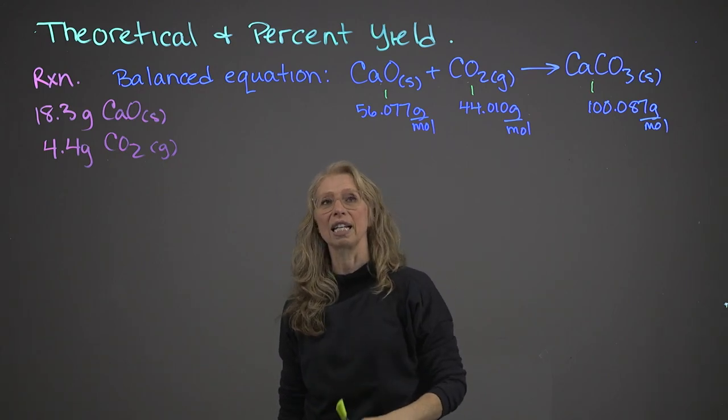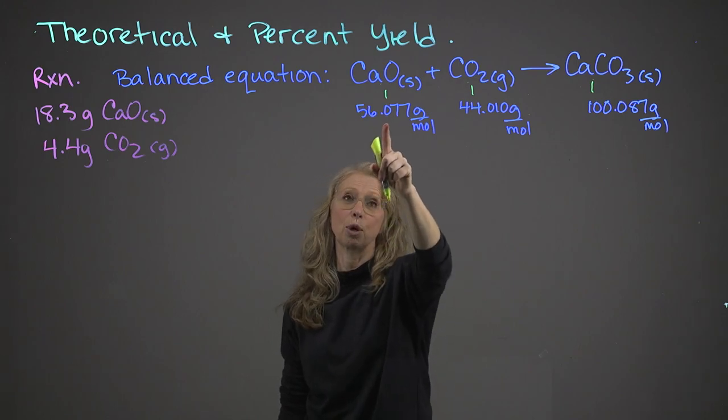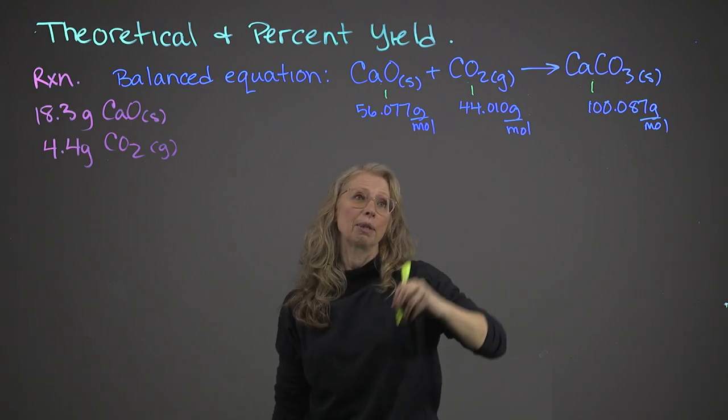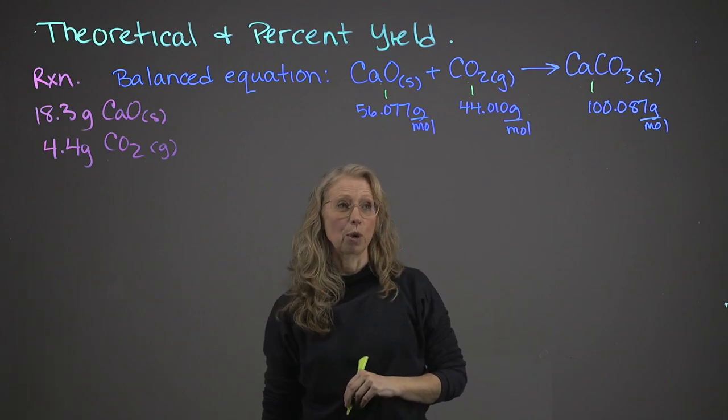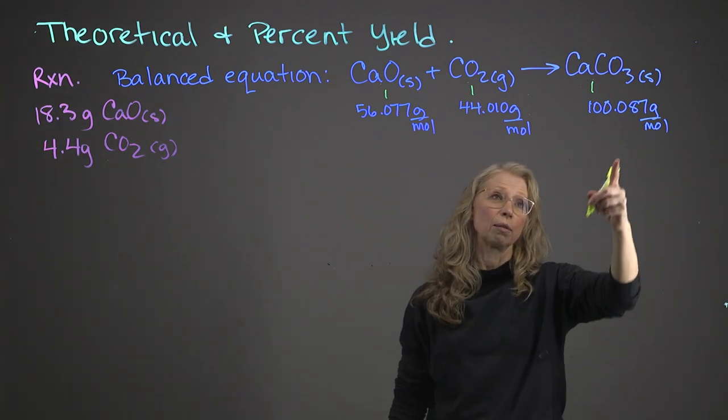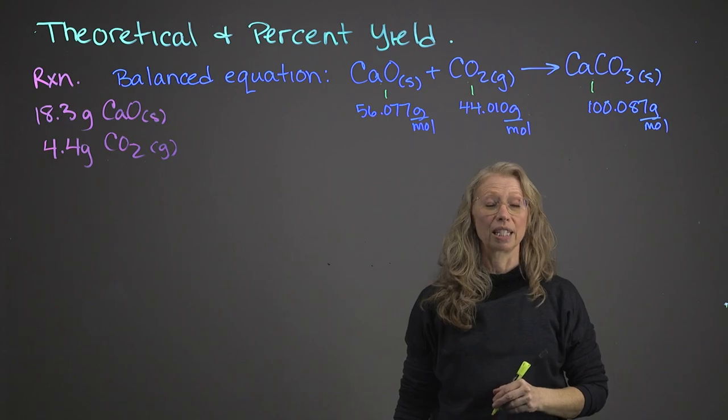And the information that I've written down below each is the molar mass. So calcium oxide has a molar mass of 56.077 grams per mole, carbon dioxide 44.010 grams per mole, and calcium carbonate 100.087 grams per mole.